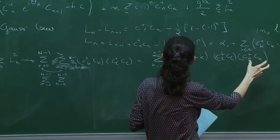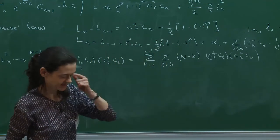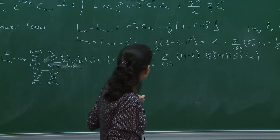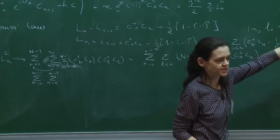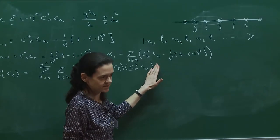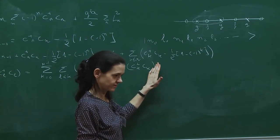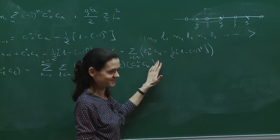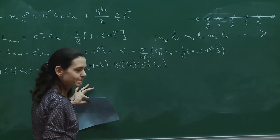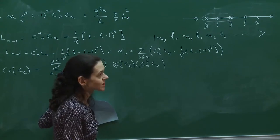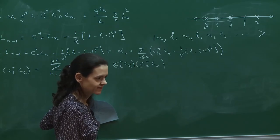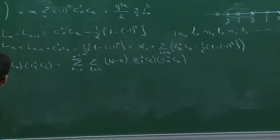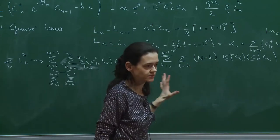A question was raised: is this equivalent to integrating out gauge fields in the Lagrangian language? Yes, it's the same thing — I'm just solving Gauss law in the discrete formulation and writing everything in terms of fermions. What this means for the Hamiltonian is that I'll have terms that are products of sums of fermionic occupations to the left of site k, times the number operator n_k. This term appears more and more times as we go further right, because every subsequent site includes all the terms to the left.